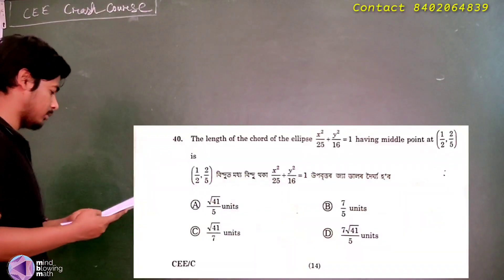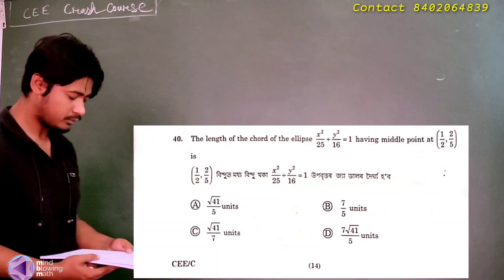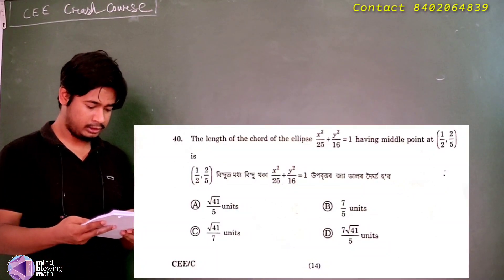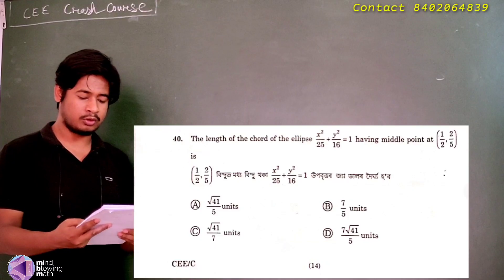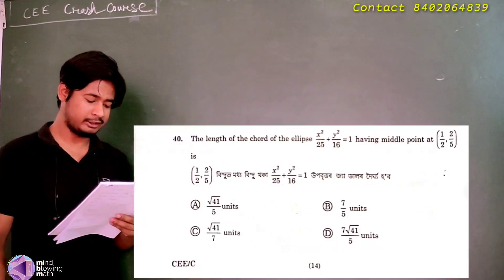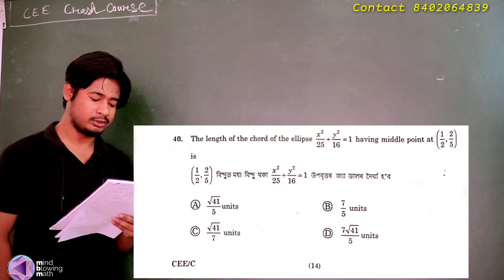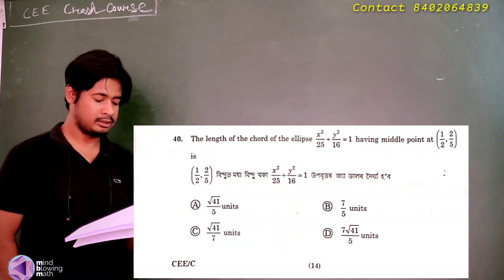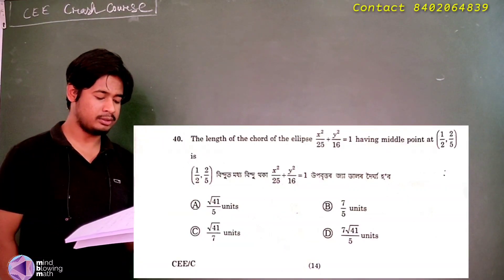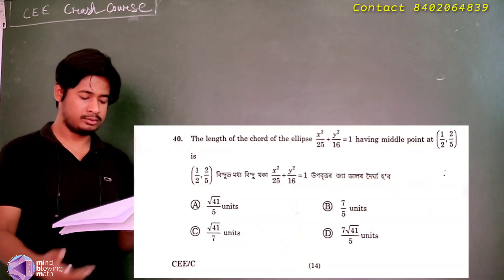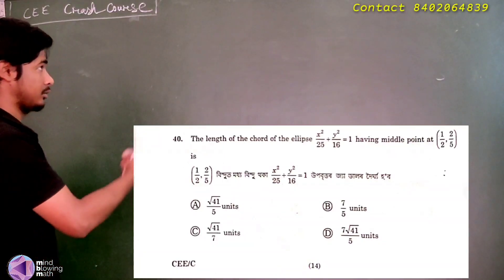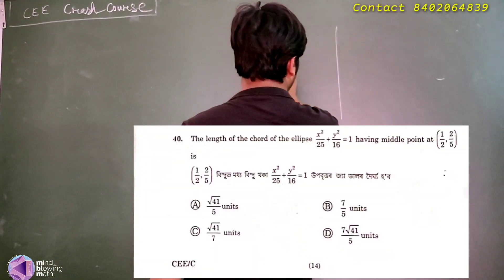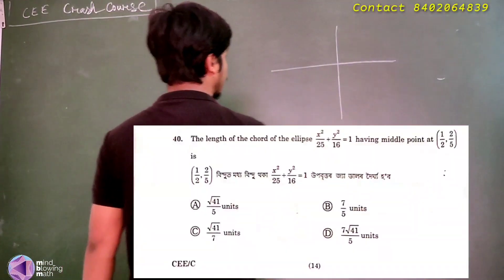Question number 40 is a very nice question. Find the length of the chord of the ellipse x squared by 25 plus y squared by 16 equals 1, having midpoint at (1/2, 2/5).